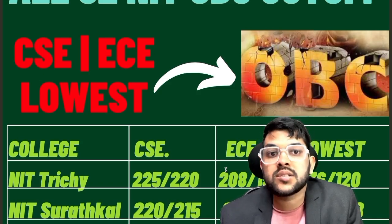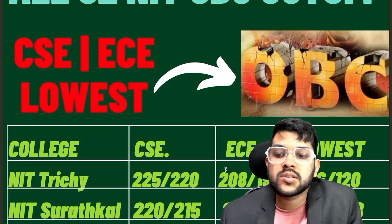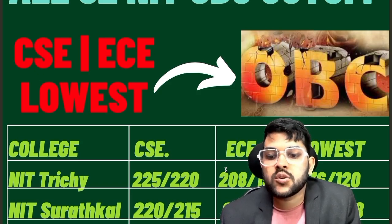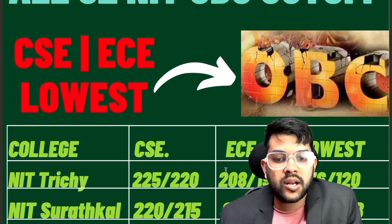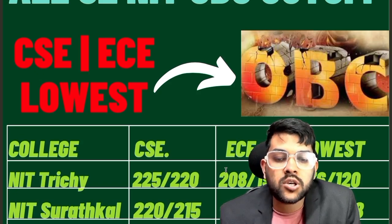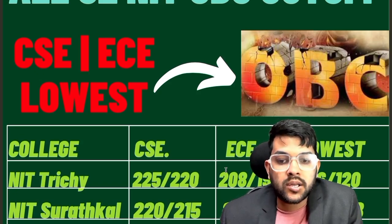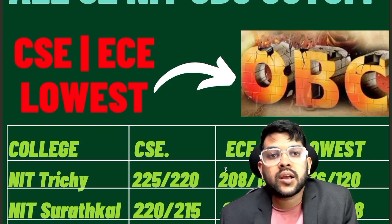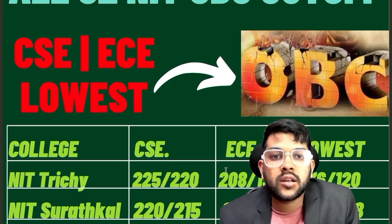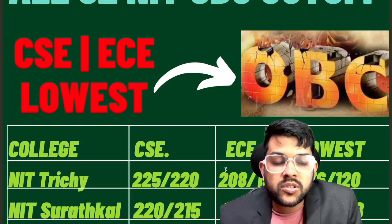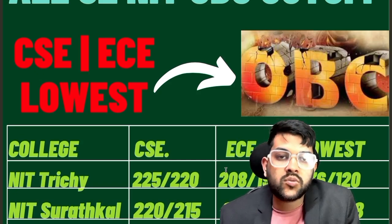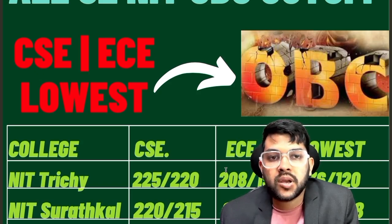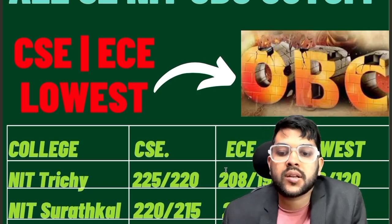After the slash, marks are for female because for female there is a separate reservation — that's why only 220 marks required for female. For EC: 208 and 195, that is for male and female. For lowest — meaning if you just want to enter into NIT Trichy — older NITs have lots of branches, so lower branches are possible at very low marks, that is 136 and 120 also. You will get the lower branch in NIT Trichy; I'm talking about OBC category.